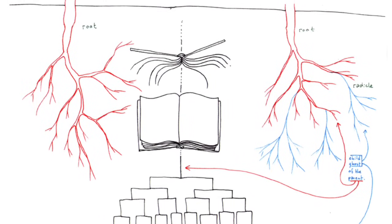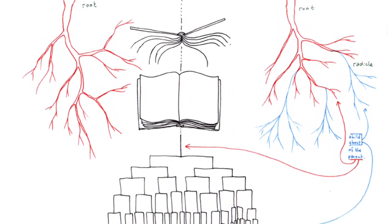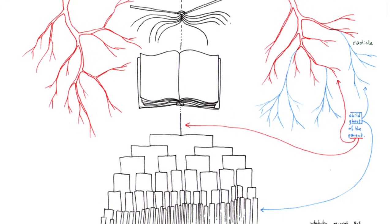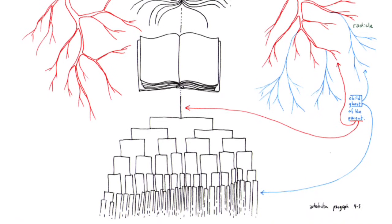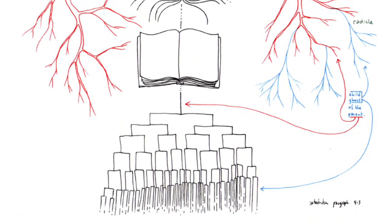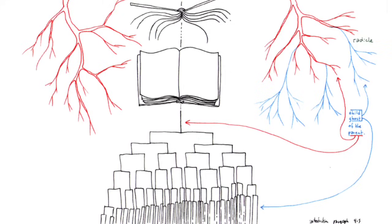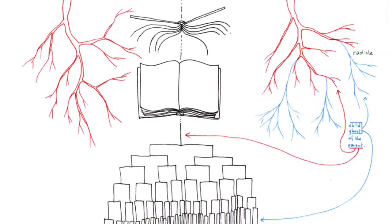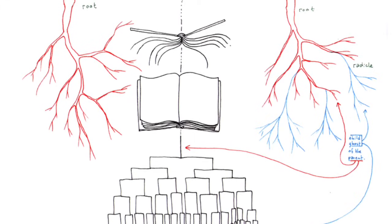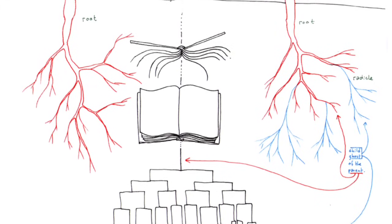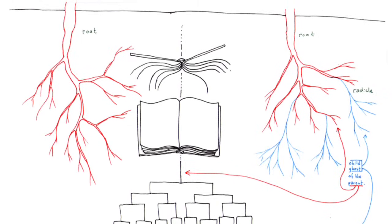A first type of book is the root book. The tree is already the image of the world, or the root, the image of the world tree. This is the classical book, as noble, signifying, and subjective organic interiority, the strata of the book. The book imitates the world as art imitates nature. By procedures specific to it that accomplish what nature cannot or can no longer do. The law of the book is the law of reflection, the one that becomes two. How could the law of the book reside in nature when it is what presides over the very division between world and book, nature and art? One becomes two.